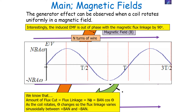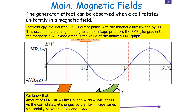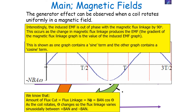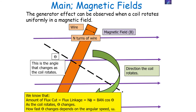It is important to note that the induced EMF is out of phase with the magnetic flux linkage by 90 degrees. This occurs because the change in magnetic flux linkage produces the EMF. So the gradient of the magnetic flux linkage graph gives the value of the induced EMF. We can also say this because one graph contains a sine term and the other a cosine term.